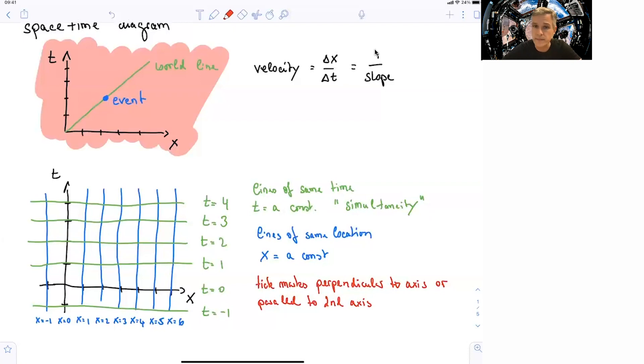So lines here in green of the same time, meaning time is constant, they happen, all events on that line happen simultaneously. While in blue are those lines where events happen at the same location. So x is equal constant, some specific values.